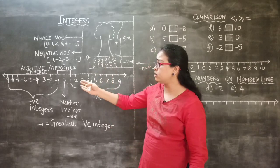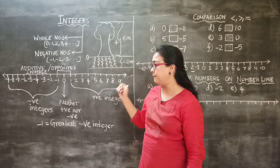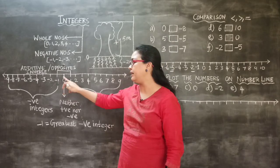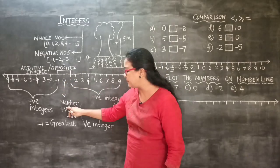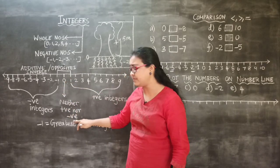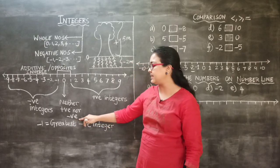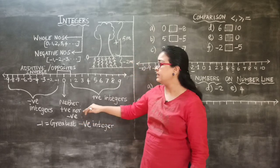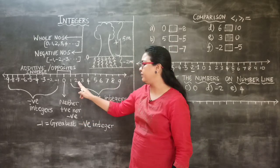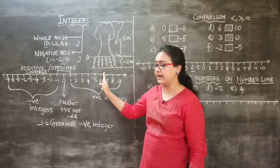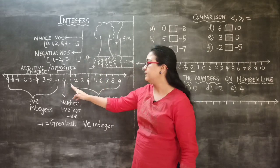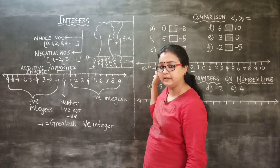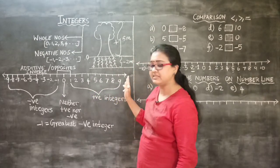Now let's learn how to specify this on the number line. Zero is the center point of the integer number line — it is neither positive nor negative. Towards the right side after 0, we specify positive integers: 1, 2, 3, 4, 5, 6, 7, 8, 9 and they keep going. So towards the right hand side after 0 are the positive integers.